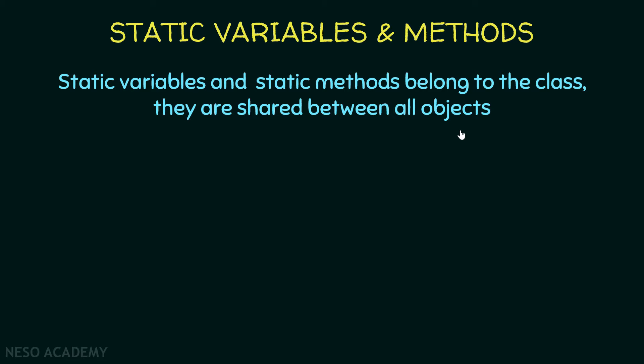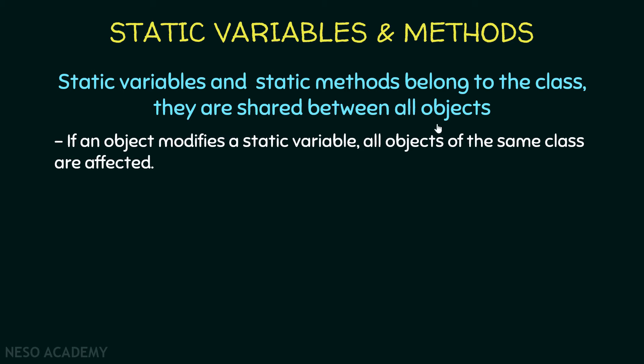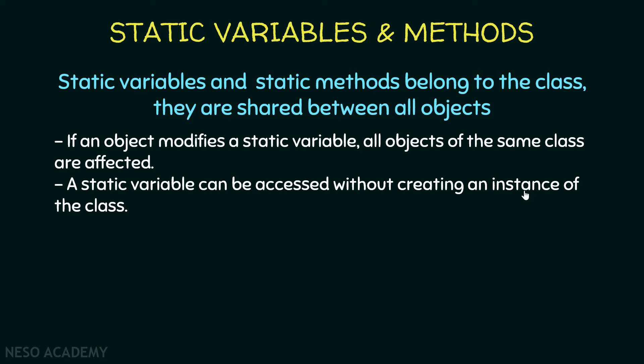If an object modifies a static variable, all objects of the same class are affected, because the static variable is shared. Also, a static variable can be accessed without creating an instance of the class, because it belongs to the class rather than the object. So to access static variables, we can use the name of the class. We also have two ways: access via an object, or access via the class name.